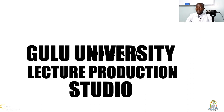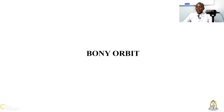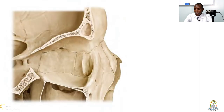Welcome to Dr. Solomon Ledvid. Today we are going to talk about the Bony Orbit. The Bony Orbit is a very important structure. It is located on the bridge of the nose. It acts as a cavity that houses the orbit and its associated structures.